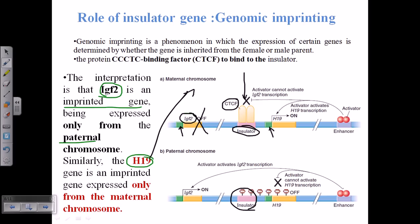On the paternal chromosome, due to the methylation present in the H19 gene, even if the enhancer can be bound here and the activator protein is bound with the promoter sequence, it won't recruit polymerase — so the expression of H19 gene will be halted. Only the expression of IGF2 will be on, because there is no methylation present in IGF2. This ensures that the paternal chromosome will express IGF2 but not H19, while the maternal chromosome can only express H19 but not IGF2.